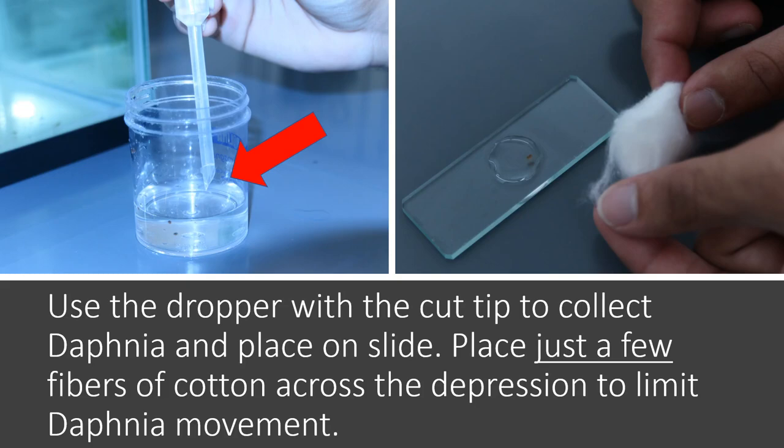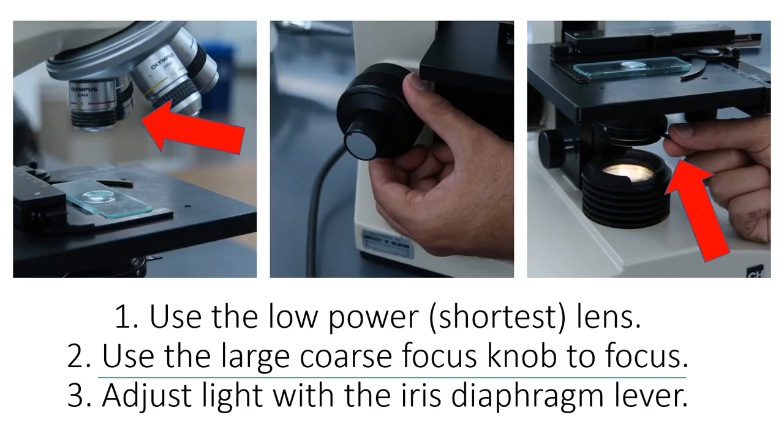So then after that, we used some cotton fibers from a cotton ball here to trap the daphnia in place in this little depression. And this little speck here is the daphnia. I did a little review for microscopes. So, microscopes have these four different settings that you can use that have various levels of magnification. We were just on this very lowest power in the red lens. The coarse adjustment knob, this big one here, was what we used to focus. And then we also used the iris diaphragm lever to adjust the proper amount of light.